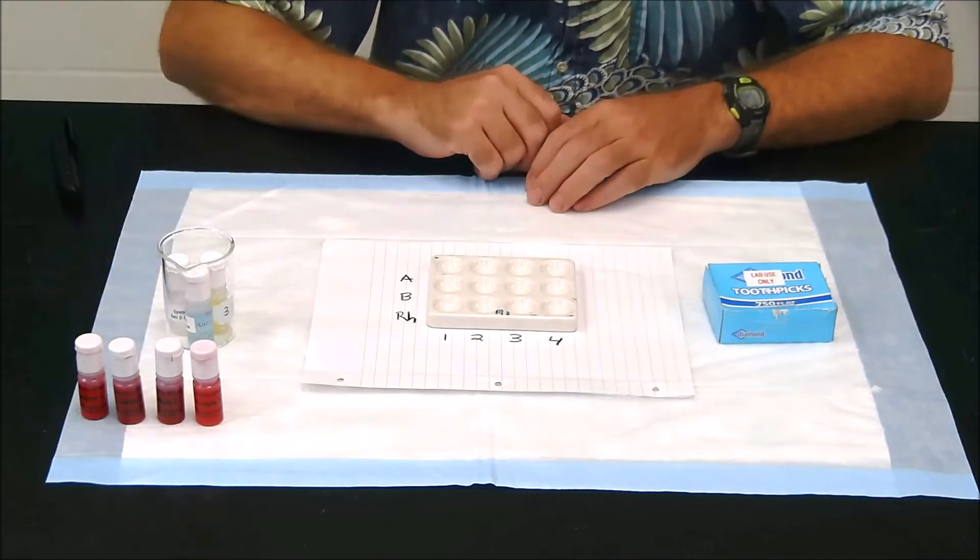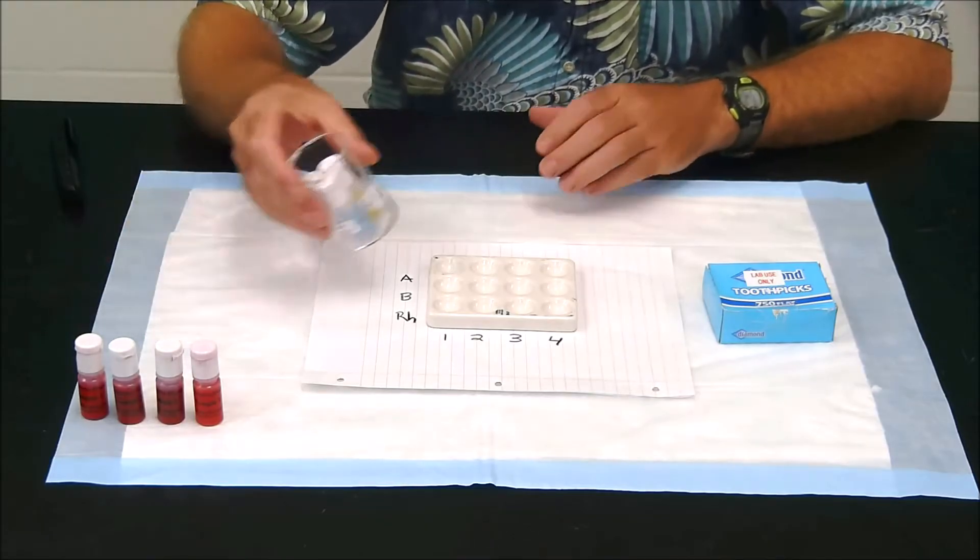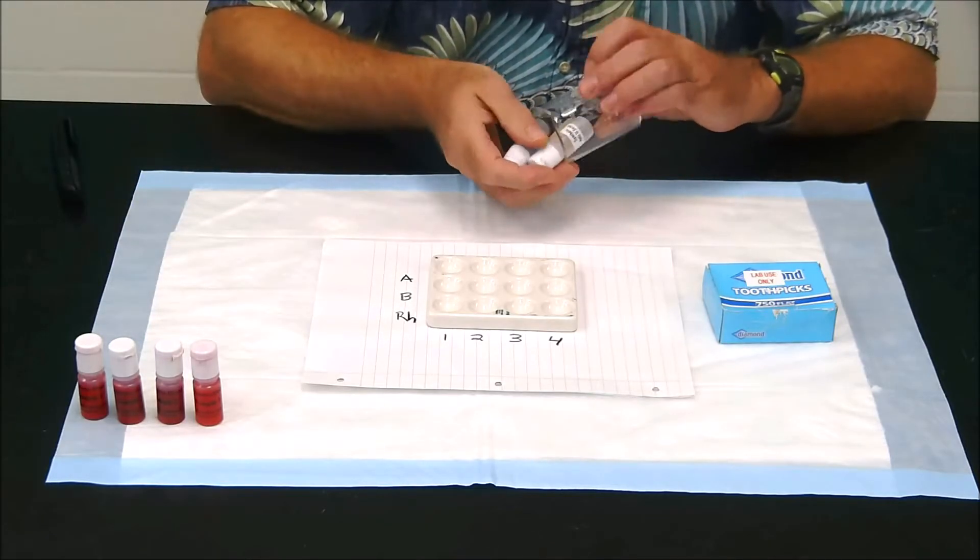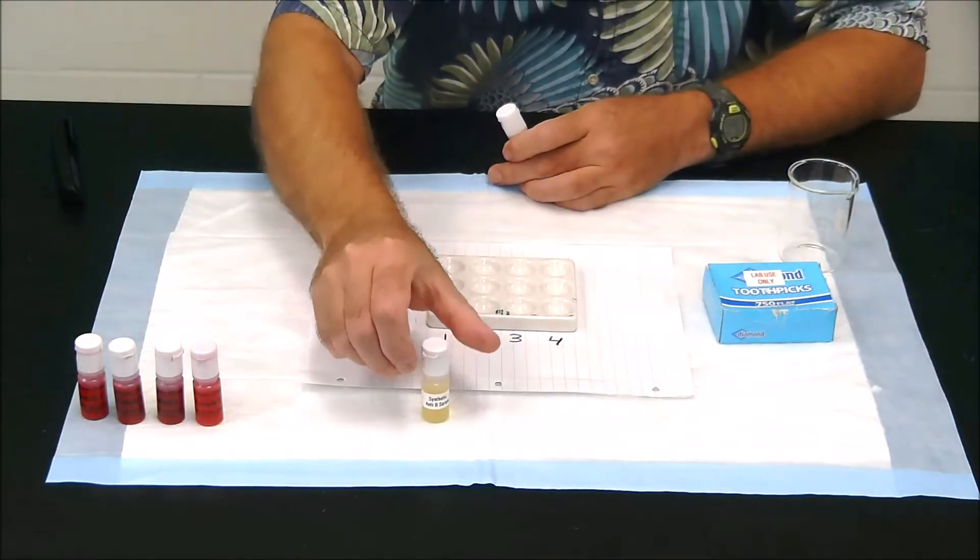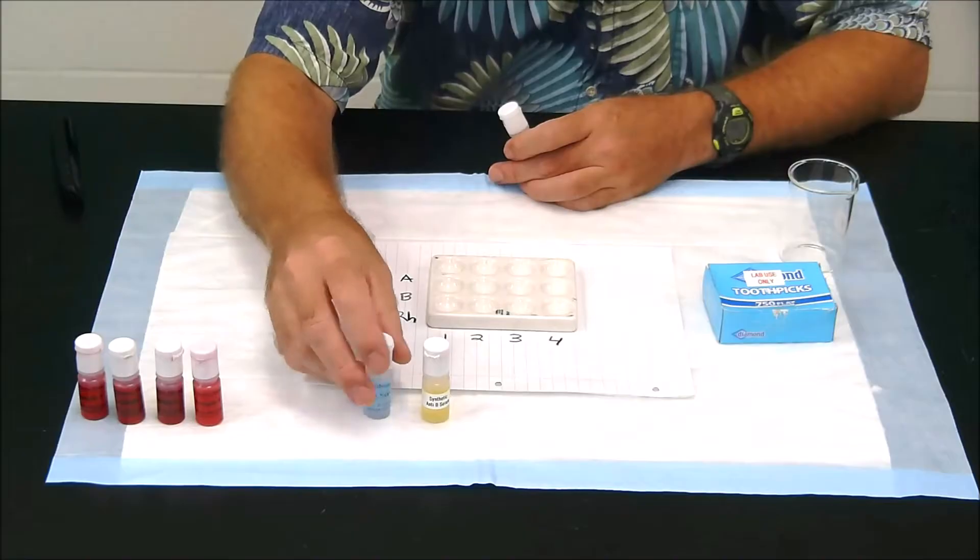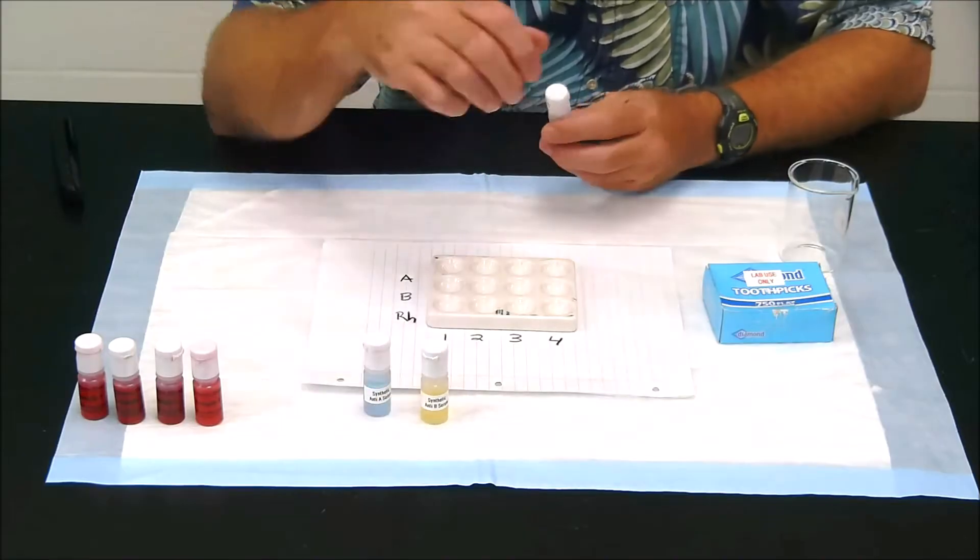You'll also need the three anti-sera, and these are essentially like antibodies. So we have anti-A, anti-B, and something called anti-D, which is anti-Rh.